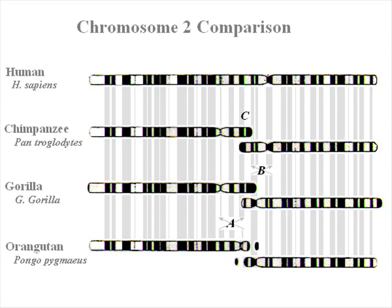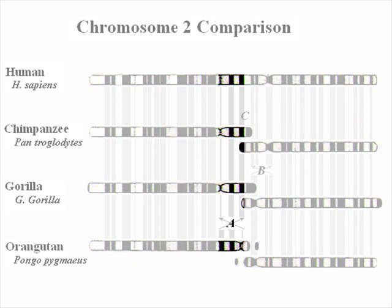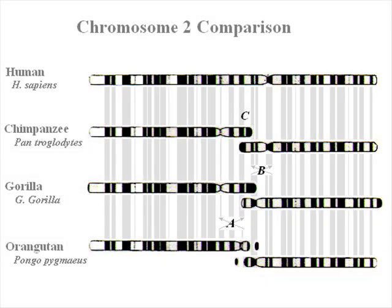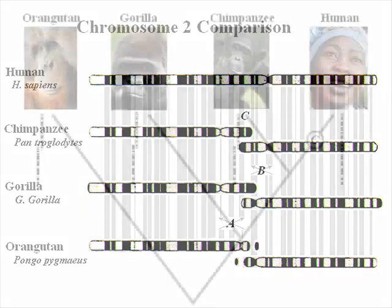The other two discontinuities are of a different type. If you look carefully at the banding pattern in the A and B areas, you can see that by reversing those segments before the discontinuity, they align perfectly. This type of mutation is called an inversion, and has been regularly observed in the lab and in nature.